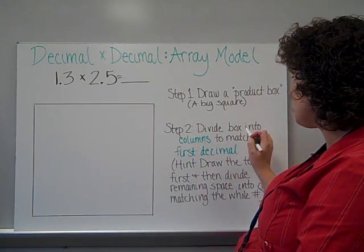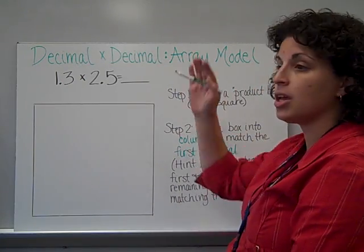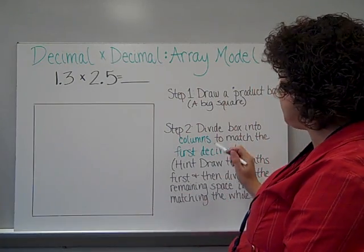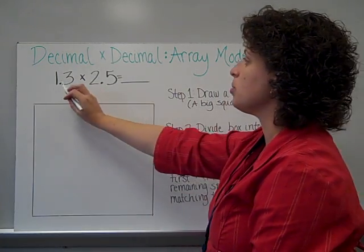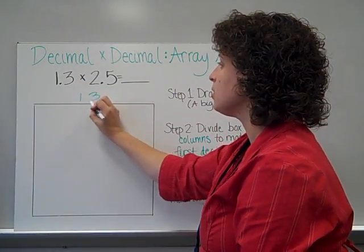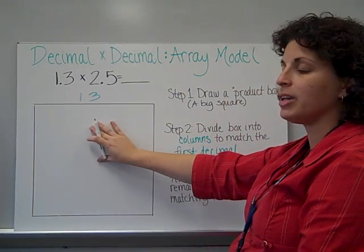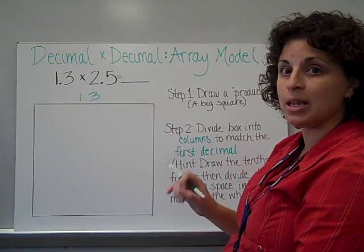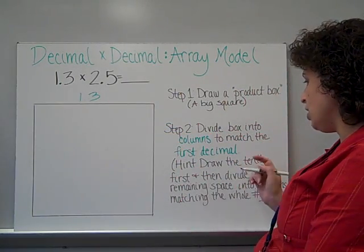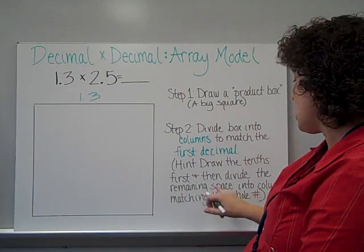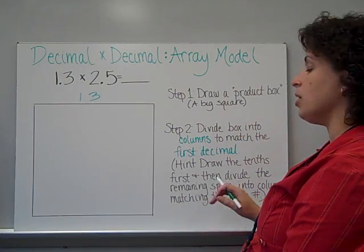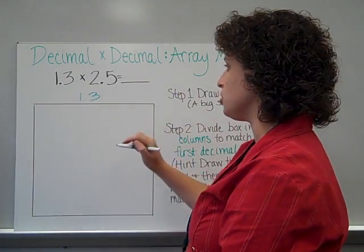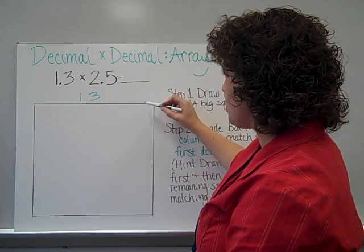So I have my square ready, and I'm ready for step 2. Divide the box into columns. Columns are vertical, up and down, to match the first decimal. So my first decimal is 1 and 3 tenths. And so now I need to cut this box to show 1 whole and 3 tenths. I have a hint here for you. Draw the tenths first, and then divide the remaining space into columns matching the whole numbers, which here I will just have 1.